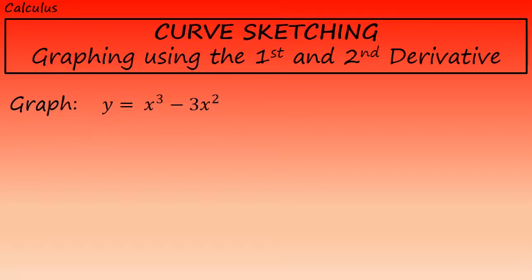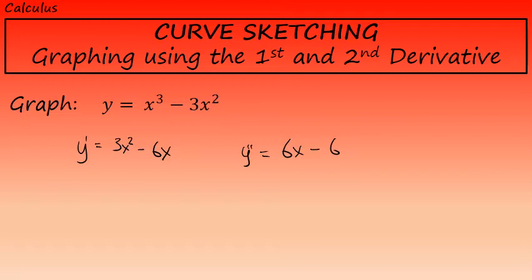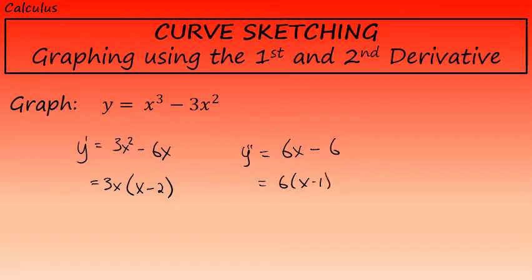The derivatives are very simple in this problem. The first derivative, using the power rule on each term in the original equation, is 3x squared minus 6x, and the second derivative is 6x minus 6. It is often useful to have the factored versions: the first derivative factors as 3x times the quantity x minus 2, and the second derivative as 6 times the quantity x minus 1.